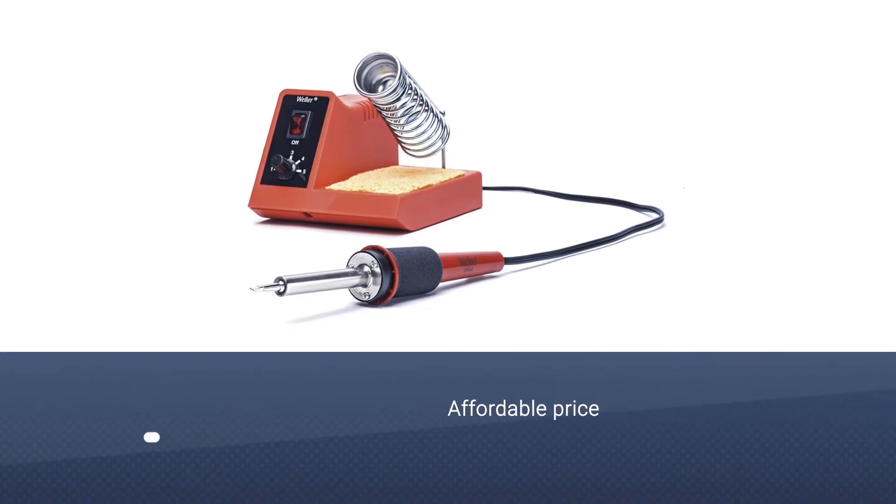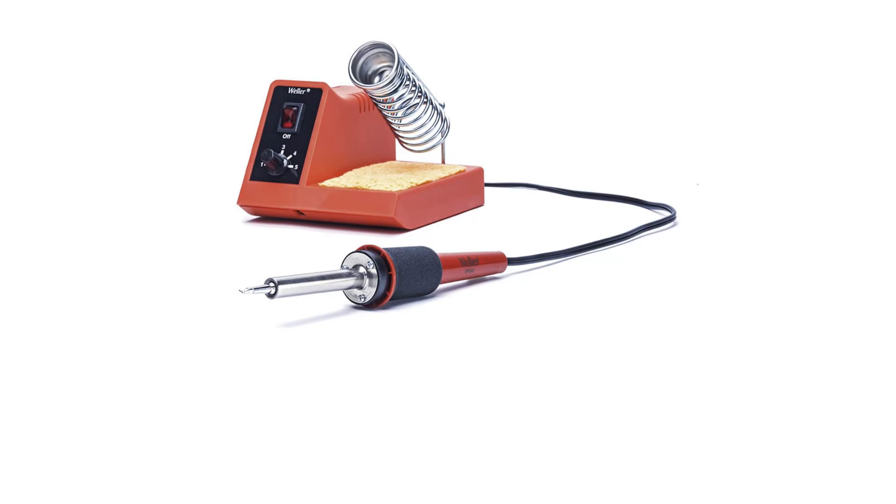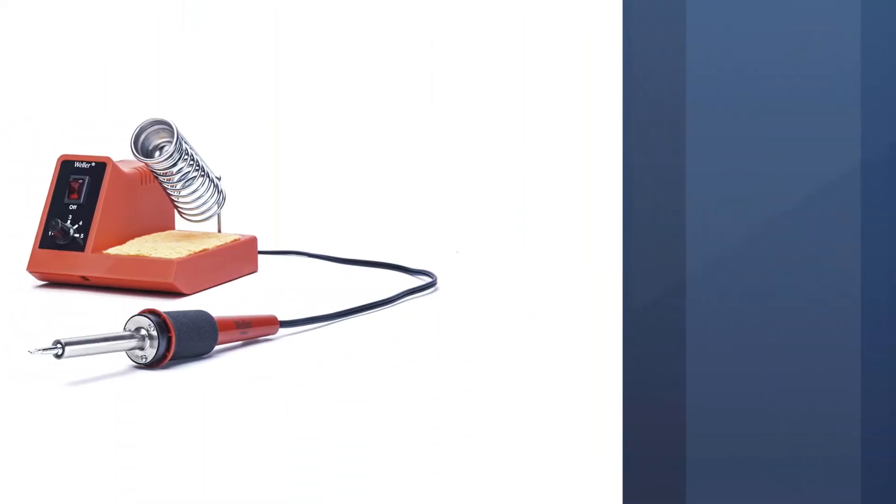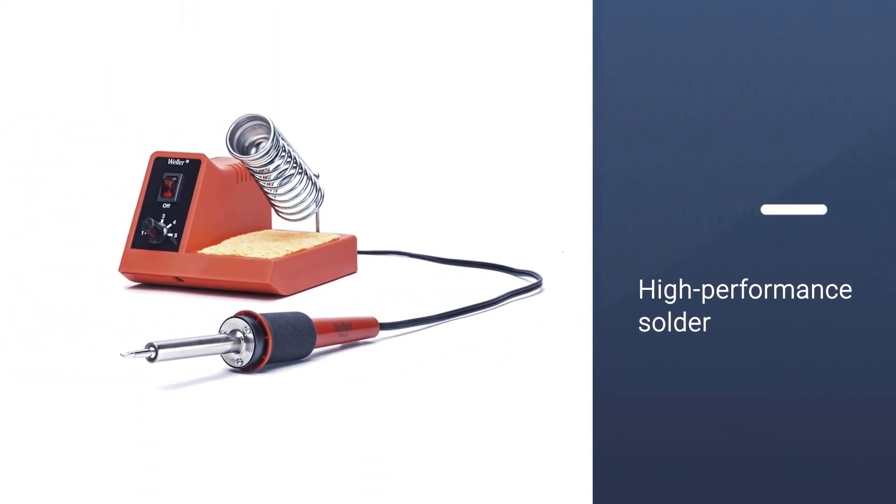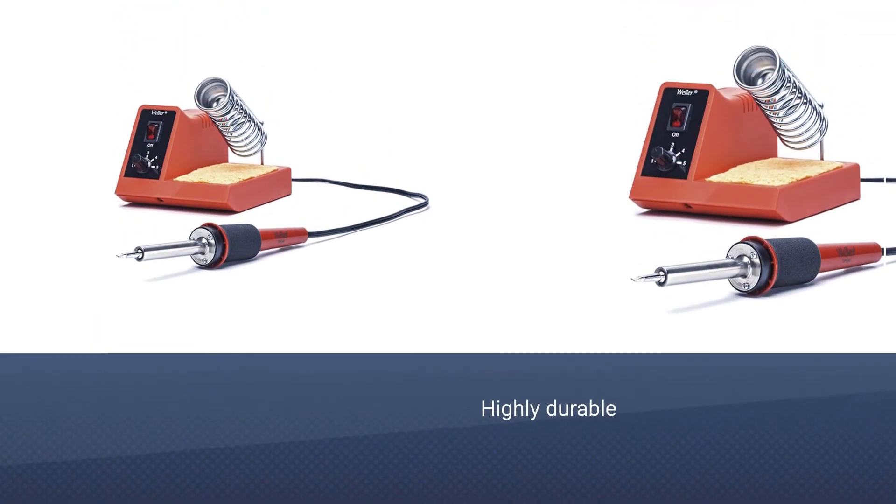Weller WLC 100 is in the third position due to its affordable price tag, and yet it offers a high performance solder which goes up to 900 degrees Fahrenheit. Despite its compact size, you get an iron holder, temperature control, and a cleaning sponge.